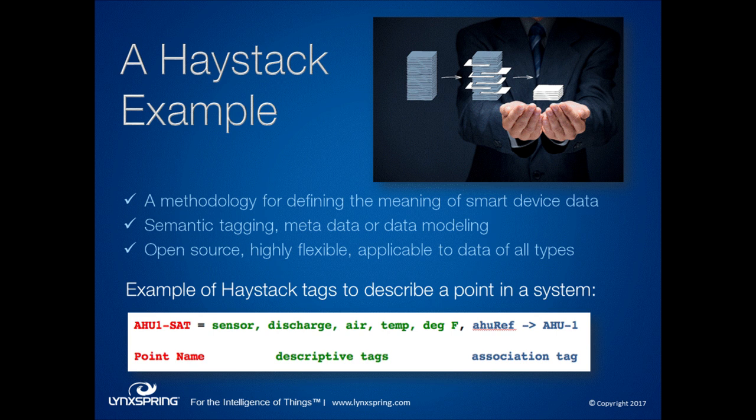Looking at an example: in red we have a name — maybe HU1-SAT, the name the BAS has. But the tags in green describe what it is. These are descriptive tags: it says it's a sensor value, it's discharge air temp, and its units are degrees F. Then in blue we have another type of tag — a tag that talks about ownership or relationship. It says this is tied to a piece of equipment known as HU-1. That's a real example of Haystack tags at work. Notice that they're readable.